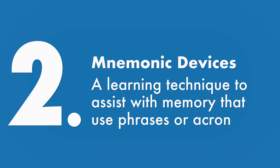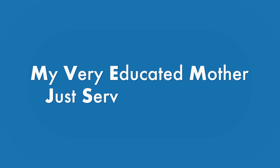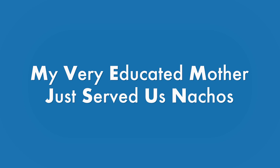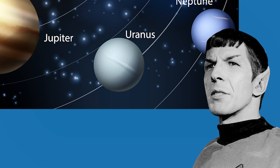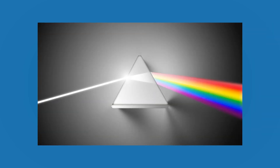Number two: mnemonic devices — a learning technique to assist with memory that uses phrases or acronyms. The internet has tons of science mnemonics. For instance, 'My Very Educated Mother Just Served Us Nachos' for the order of the planets. Sorry, Pluto. Live long and prosper. Roy G. Biv for the colors of the visible light spectrum. 'Dear King Philip Came Over For Good Soup' for the classification of living things — like my friend T-Rex here. Not all mnemonics are useful; check the TEKS to ensure that the mnemonic supports the tested curriculum. And don't forget your student — a mnemonic created together is more meaningful and likely to be used on the test than one simply handed to the student.